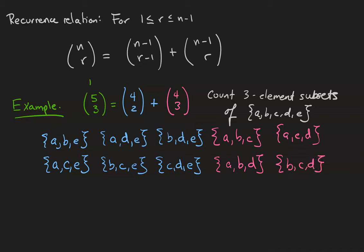5 choose 3 is equal to 10, 4 choose 2 is equal to 6, and 4 choose 3 is equal to 4. Go ahead and write those out on paper just to make sure that you can make those calculations yourself. The 4 choose 2 comes from the fact that we chose two elements from the four element set a, b, c, d, and then appended an e to each one of those subsets, giving us six subsets that way.